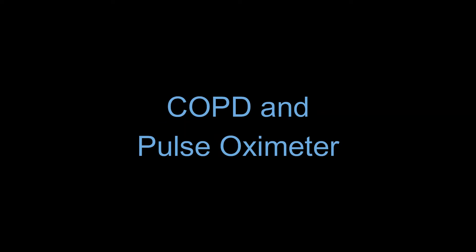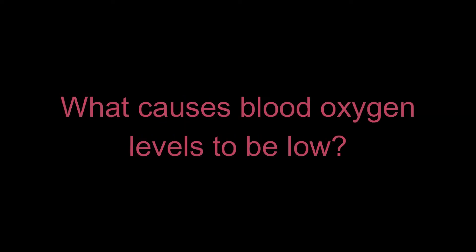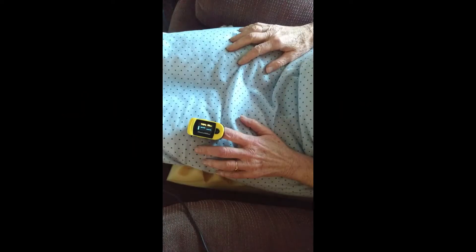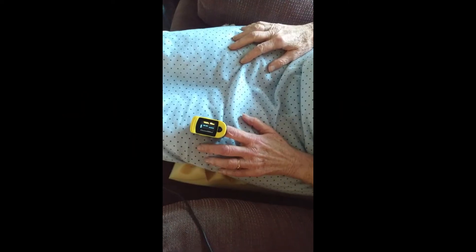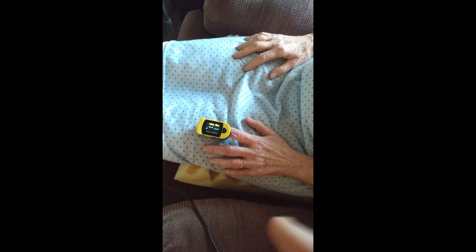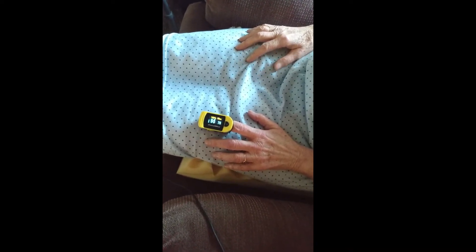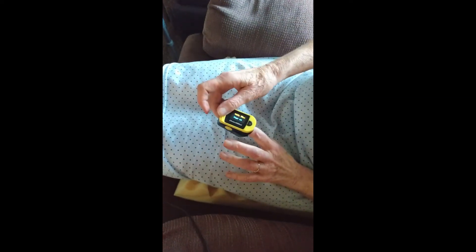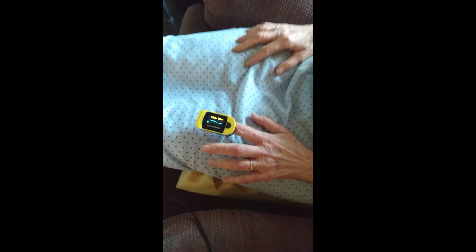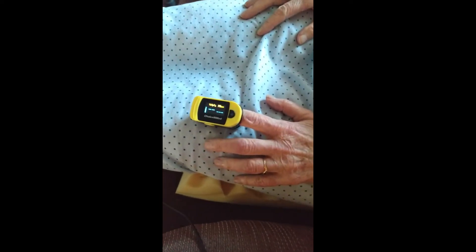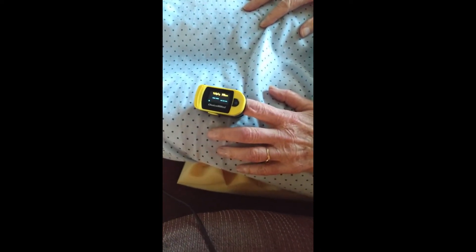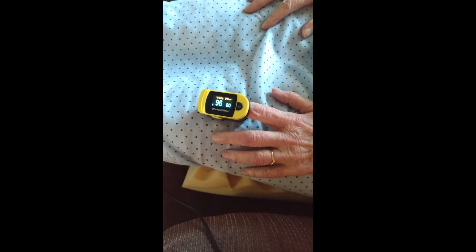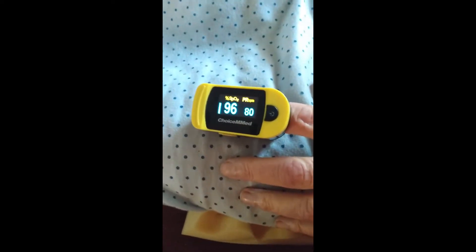What causes blood oxygen levels to be low? Conditions that can negatively affect your blood oxygen level include COPD — including chronic bronchitis and emphysema — acute respiratory distress syndrome, asthma, collapsed lung, anemia, congenital heart defects, heart disease, and pulmonary embolism.